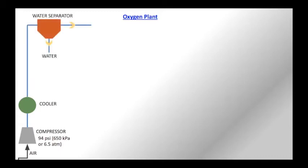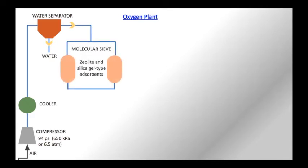The oxygen plant primarily works from atmospheric air. The air is compressed to 94 PSI (pounds per square inch), which is equivalent to 650 kilopascals or 6.5 atmospheres. That compressed air is cooled using a water cooler, which we normally call an aftercooler. Water vapor in the air condenses and can be separated using a water separator.